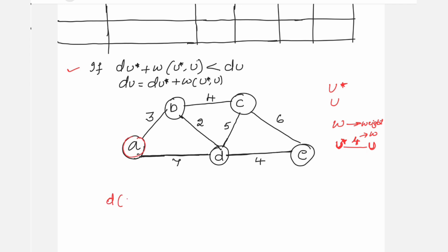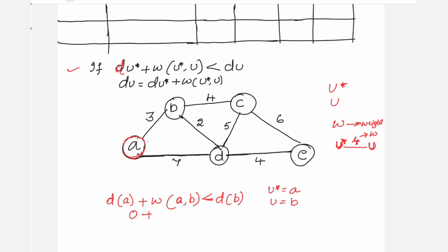Taking the value w to update the distance: taking A as u*, the formula becomes d(A) + w(A, B) < d(B). Here u* is A and u is B. W is the cost on the edge between A and B. The distance of A, meaning A reaching itself, is 0.